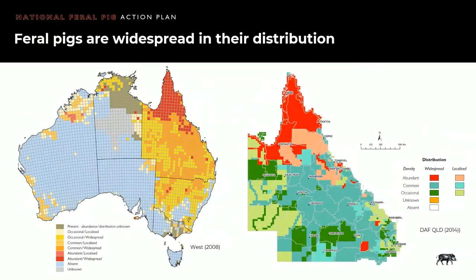So how big is the problem? Feral pigs can be found on up to 45% of Australia's land mass. The figures on this slide reflect the abundant and widespread distribution of feral pigs across Australia, including a map for Queensland. ABARES and CSIRO are currently working to update these population density and distribution maps, which will give us a better understanding since these figures were produced back in 2008 and 2014. Unfortunately, we don't have good knowledge of how many feral pigs are present in different areas, which presents lots of challenges.